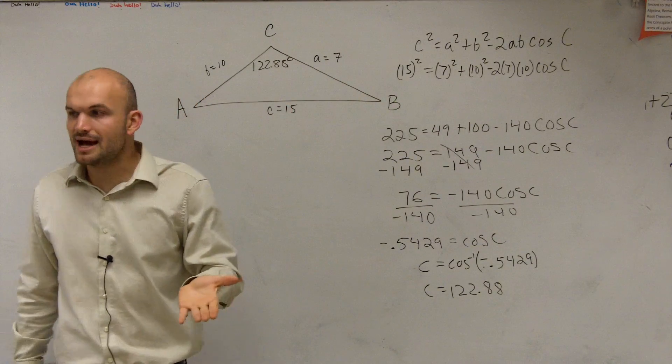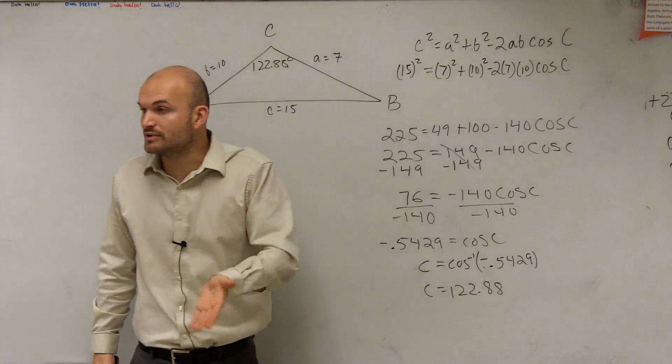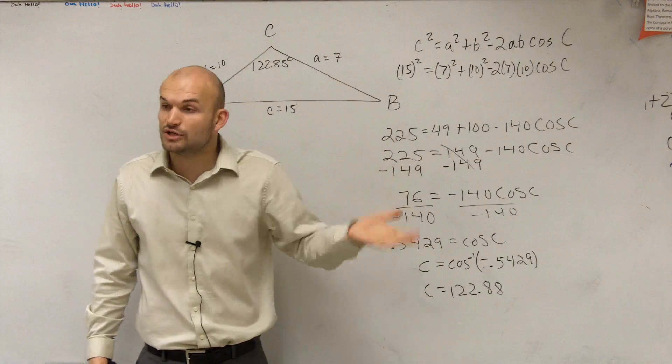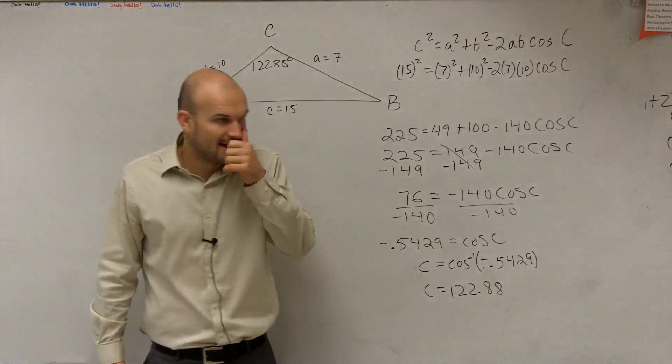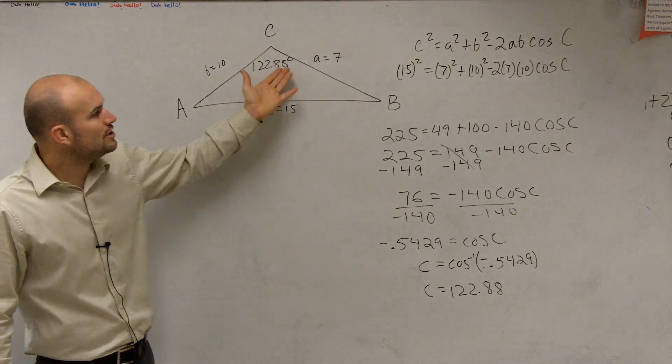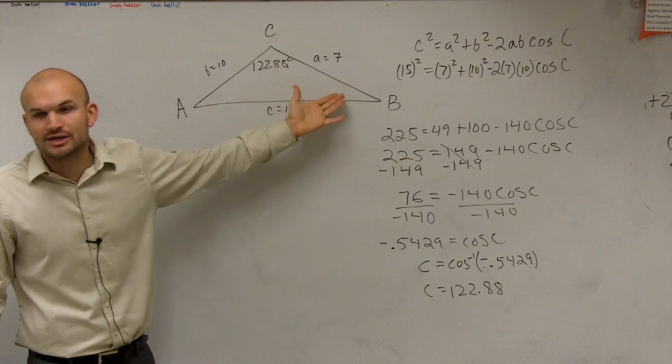And remember, using the inverse sine, we had to determine was it acute or did we use the obtuse angle? Remember when we had the ambiguous case? We had those possible two different solutions. And what we always determined was, since we're figuring out this value, we know that these other two angles have to be acute.